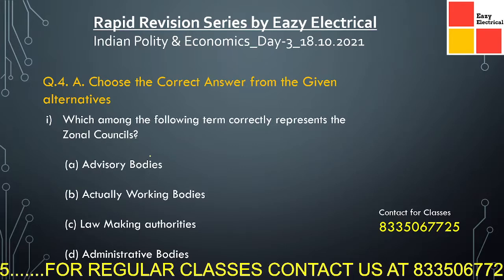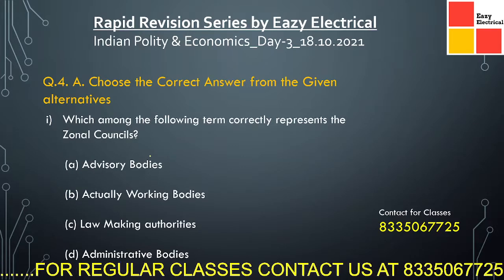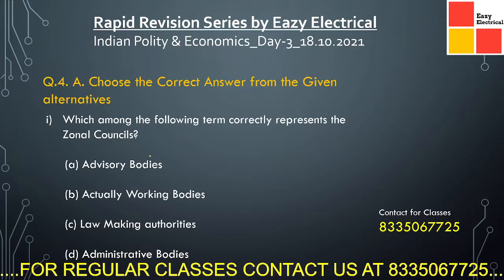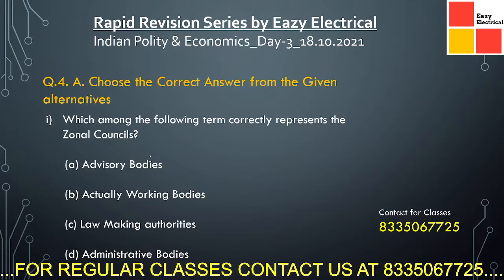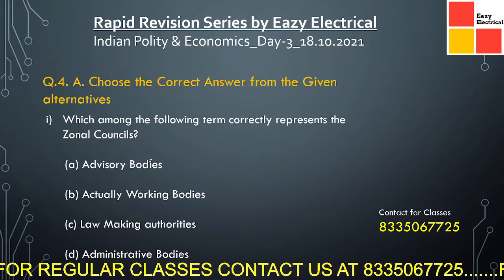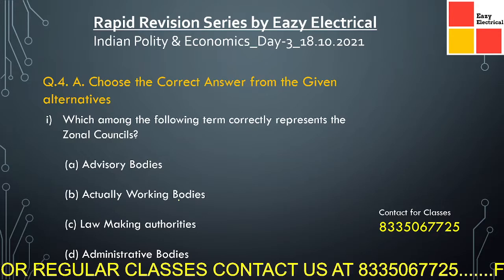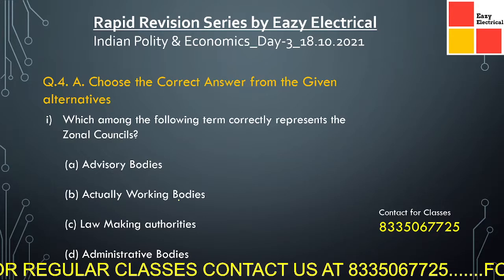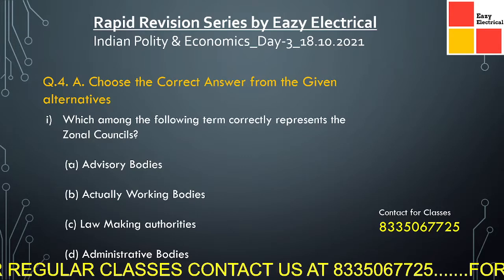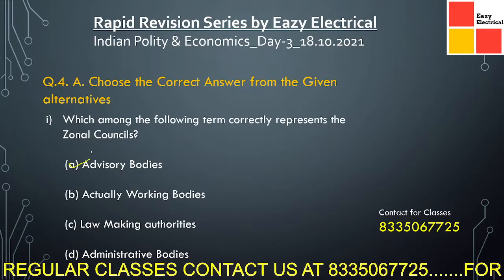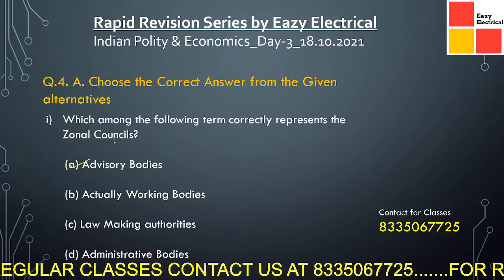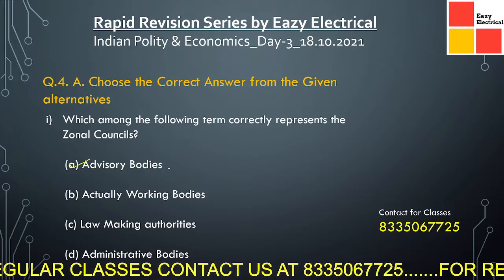Which among the following terms currently represents the zonal councils? The options are: advisory bodies, actually working bodies, lawmaking authorities, administrative bodies. Here the correct answer is option A, because the Zonal Council is also considered as advisory bodies.